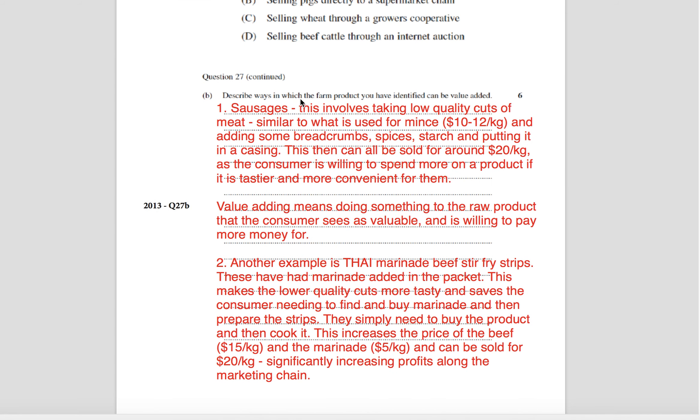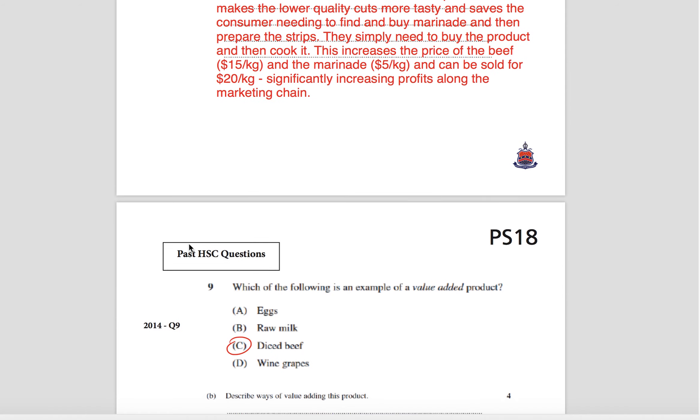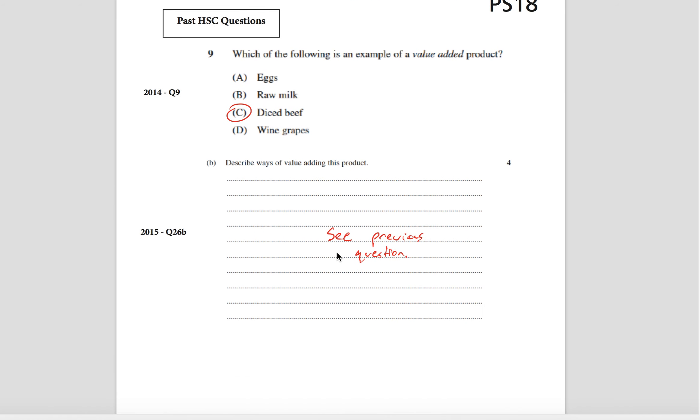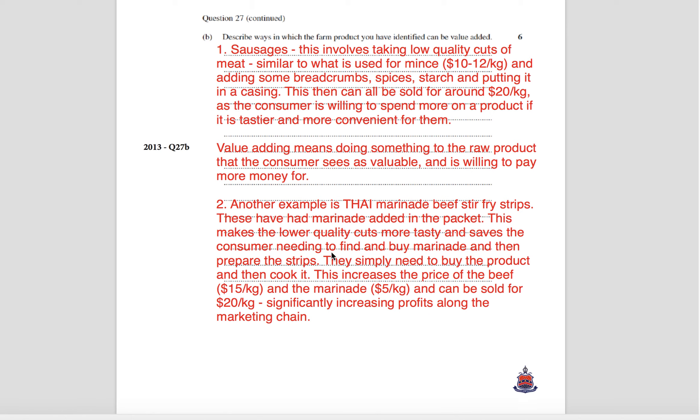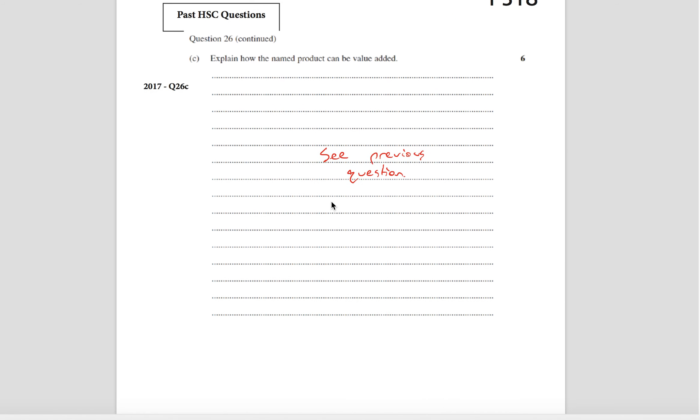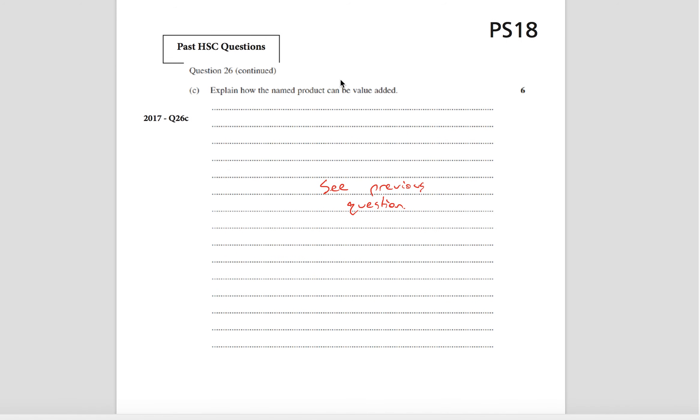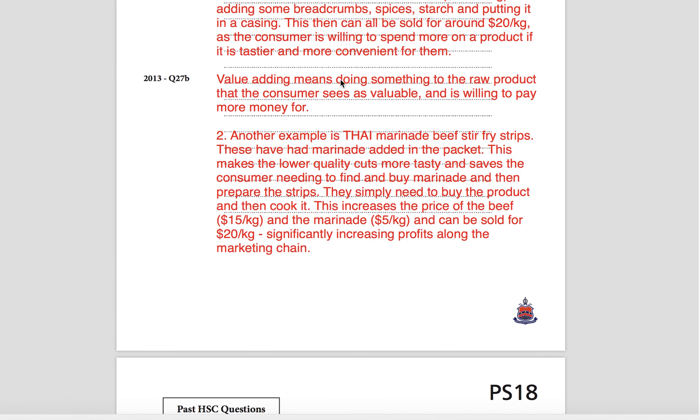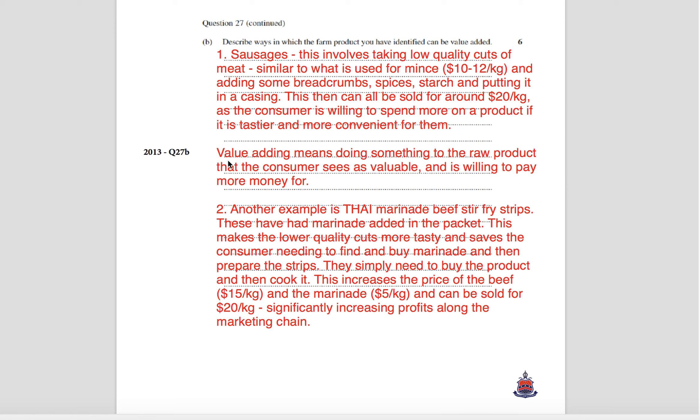Here it says describe ways in which the product can be value-added. I've given two ways and then I've talked about in the middle here what value-adding means. This is just a thorough example and I've actually done this in a way that covers a describe and also an explain. So this is a six mark question. I've got two examples there. On this format question, see previous question. You could basically use something like this for the format question and also for this 2017 six mark question, explain how it can be value-added. You could basically use this answer here because I've explained what is happening, so you should get full marks using that response in both of those.